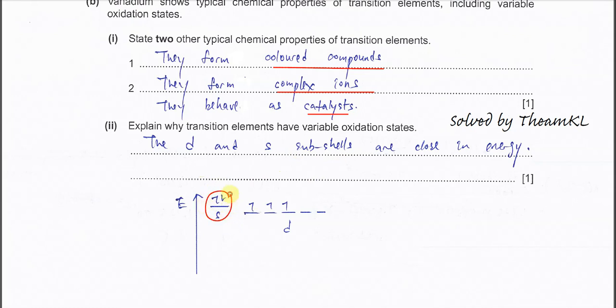Because the s orbital or subshell is higher than the d subshell. So the two electrons, means the 4s². These two electrons will remove first. Then first it will form V²⁺.